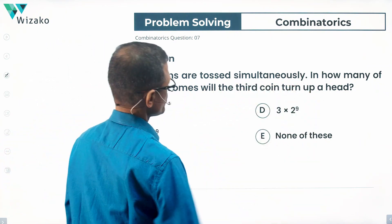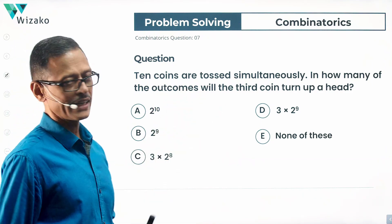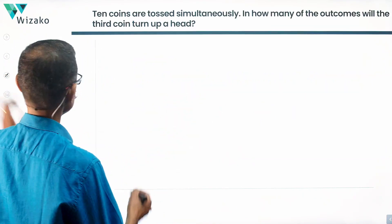10 coins are tossed simultaneously. In how many of the outcomes will the third coin turn up a head? Right. Take a look at it.